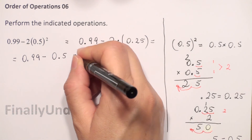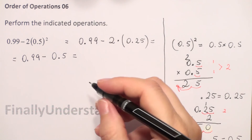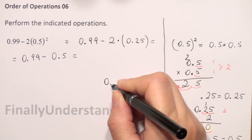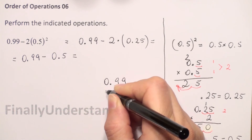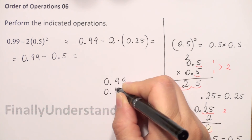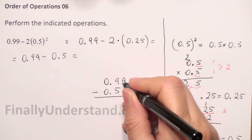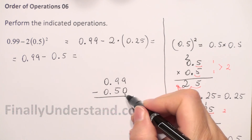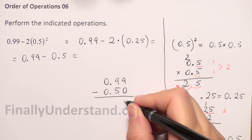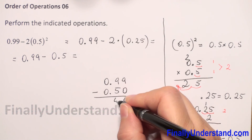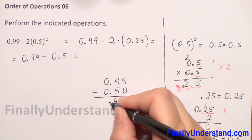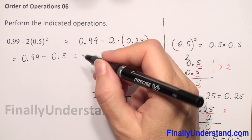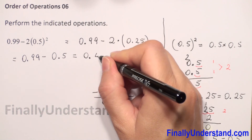Now we do the subtraction. We align the decimal points, with 0.99 on top and 0.5 on the bottom. We fill the empty space with 0, so it becomes 0.50. Then 9 minus 0 is 9, 9 minus 5 is 4, and the decimal point stays in the same column. 0 minus 0 is 0, so the solution is 0.49.